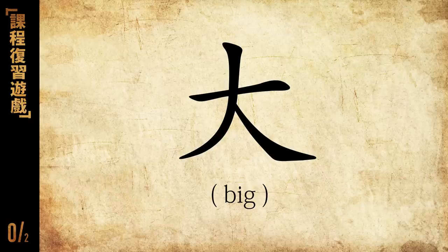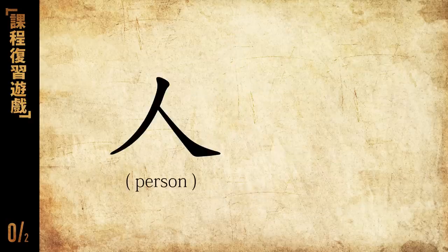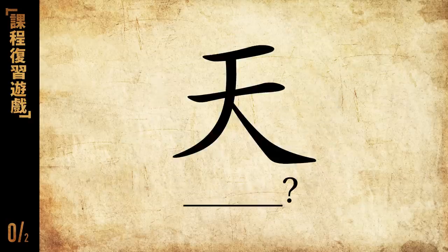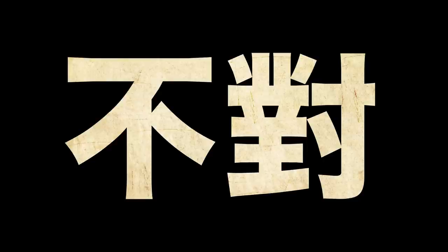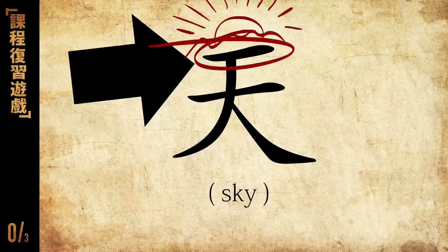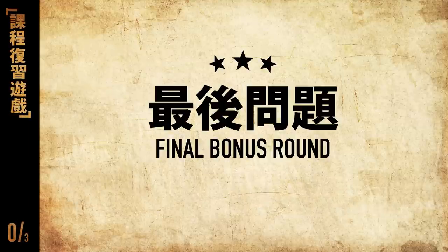It means big. Now you know person and big. So what's this one? No, wrong. It's the sky. How you know this is sky? It's right there — like you don't even try. Okay, I give a last one. This is a bonus round, okay?